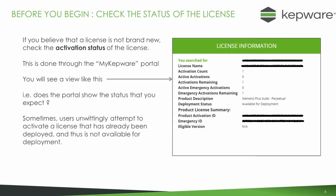If your licenses are not brand new, it's a good idea to go to the MyKepware portal and check the activation status of these licenses. It's not unusual for customers to unwittingly try to deploy a license which has already been deployed and is therefore not available for deployment. So if you go to the MyKepware portal and type in the license number, it'll show you the status as you can see on the right hand side here.